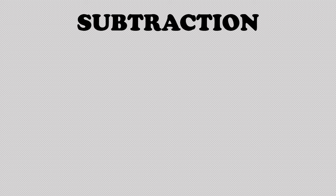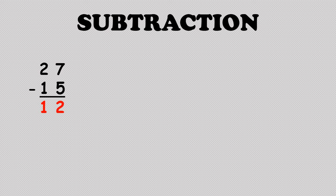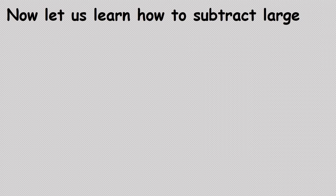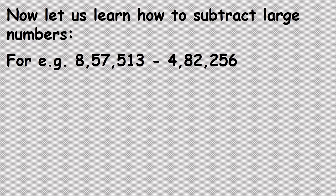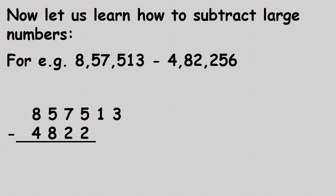Students, now let us revise subtraction and see how to subtract large numbers. The answer we get after subtracting is called the difference. For example: eight lakh fifty-seven thousand five hundred and thirteen minus four lakh eighty-two thousand two hundred and fifty-six. For subtracting large numbers we follow the same steps as for smaller numbers — step one: arrange the numbers as per their place value; step two: start subtracting from the units place.